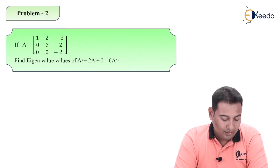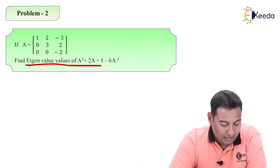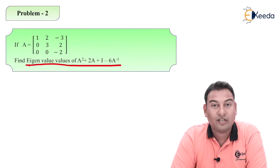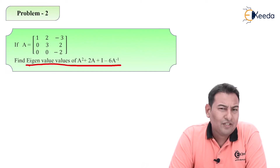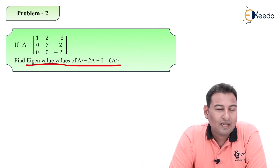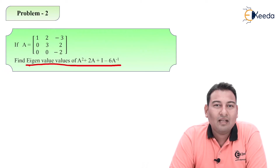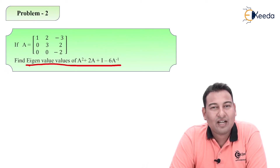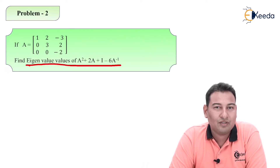Now let's have a look at this particular problem. Here we need to find eigenvalues of this particular matrix. There is property number 3 — do you remember that property? The property says eigenvalues of triangular matrices are the same as their diagonal elements.